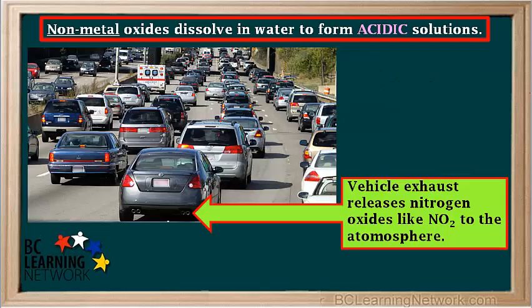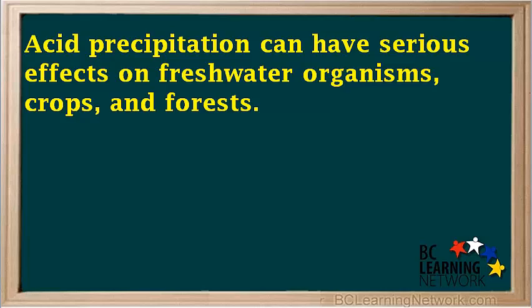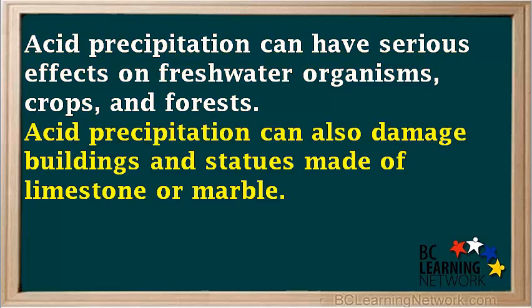Another source of acid precipitation is oxides of the nonmetal nitrogen released by vehicle exhaust. One of these oxides is nitrogen dioxide, NO₂. NO₂ dissolves in rainwater to produce both nitrous and nitric acids, which cause acid precipitation. Acid precipitation can have serious effects on freshwater organisms, crops, and forests.